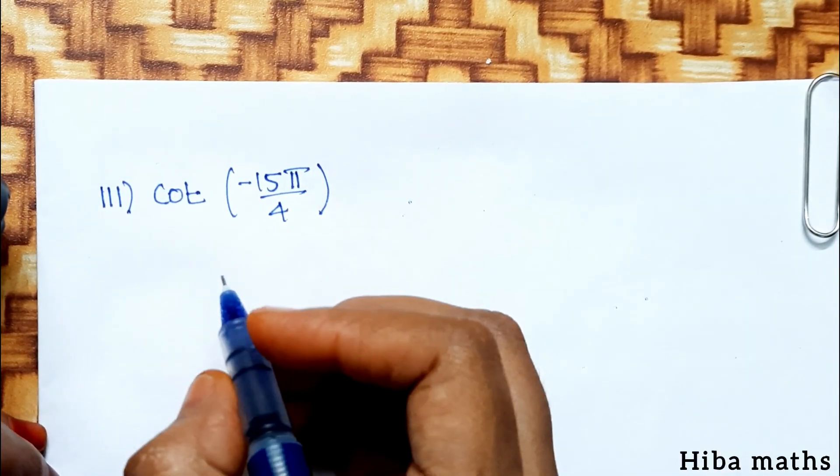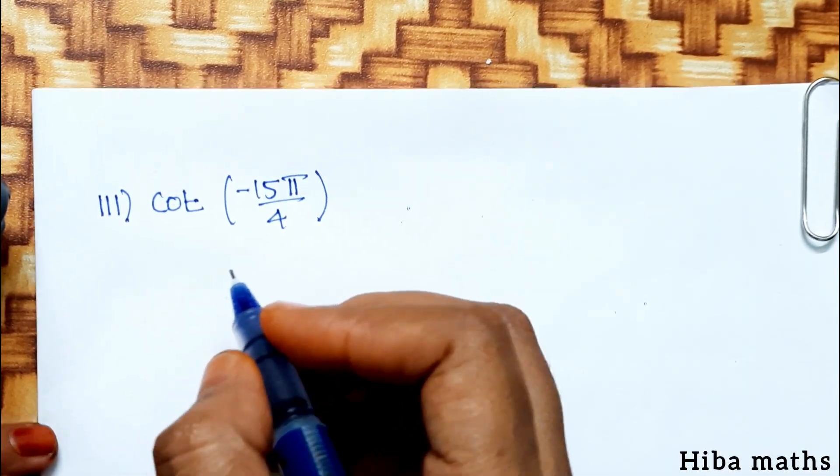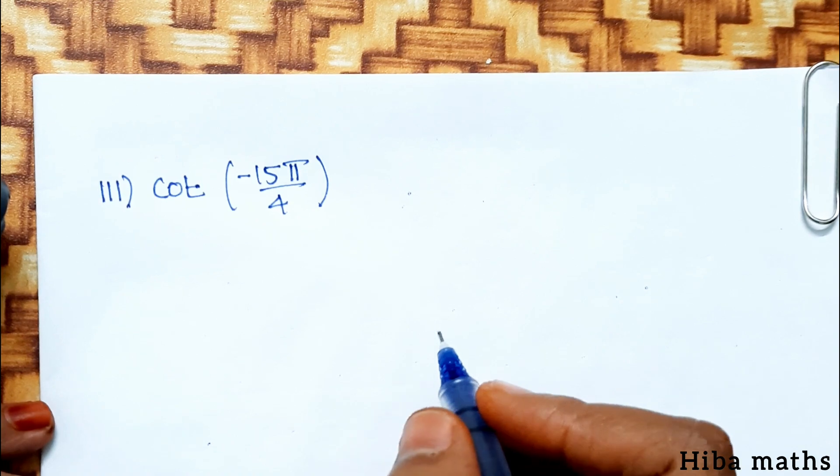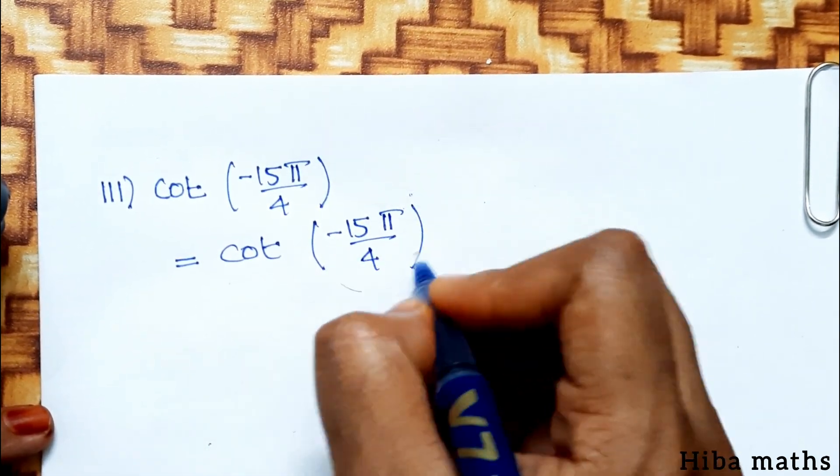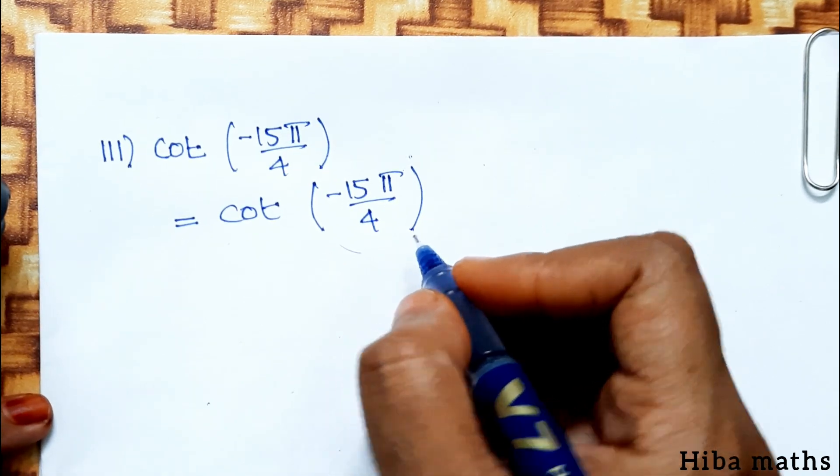Third subdivision, cot minus 15 pi by 4. This equals minus cot 15 pi by 4.